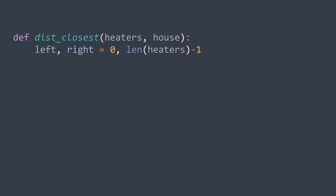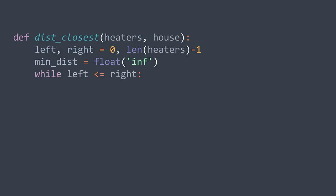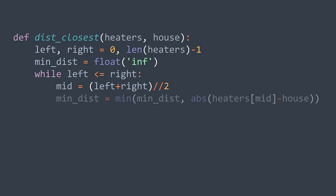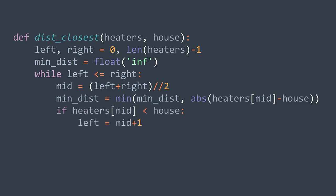In code, we set left and right to the extremities of the array at indexes 0 and m-1. We initialize min_dist to infinity, then while left is less than or equal to right, we calculate mid as left plus right divided by two. We update min_dist to the minimum between its current value and the absolute distance between the house and the heater at position mid. If the heater at mid is smaller than the house, we go to the right part (left = mid + 1); otherwise we go to the left part (right = mid - 1). After the loop we return min_dist. Note that you could directly use Python's bisect function, but this shows how to adapt binary search to this problem.